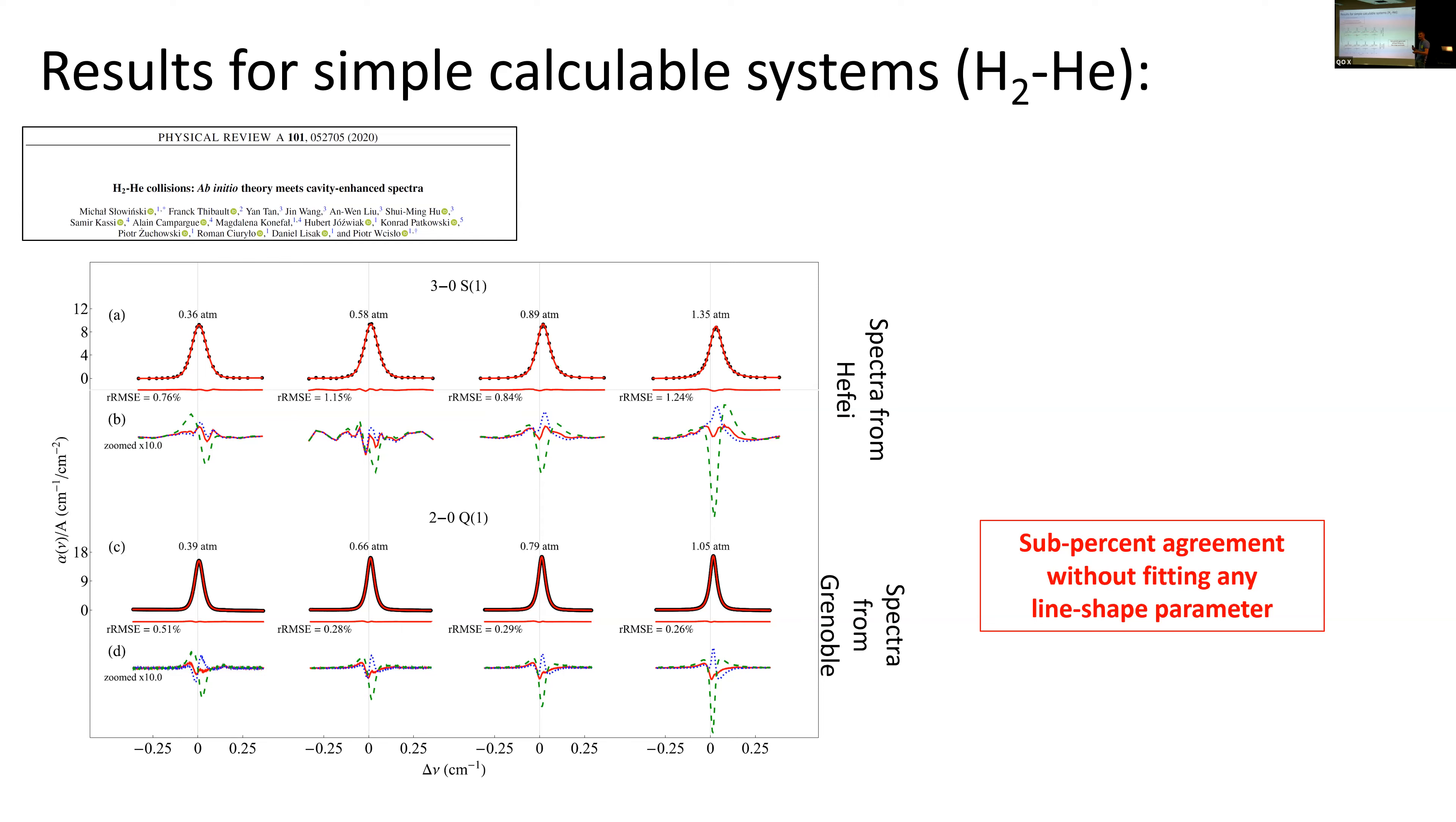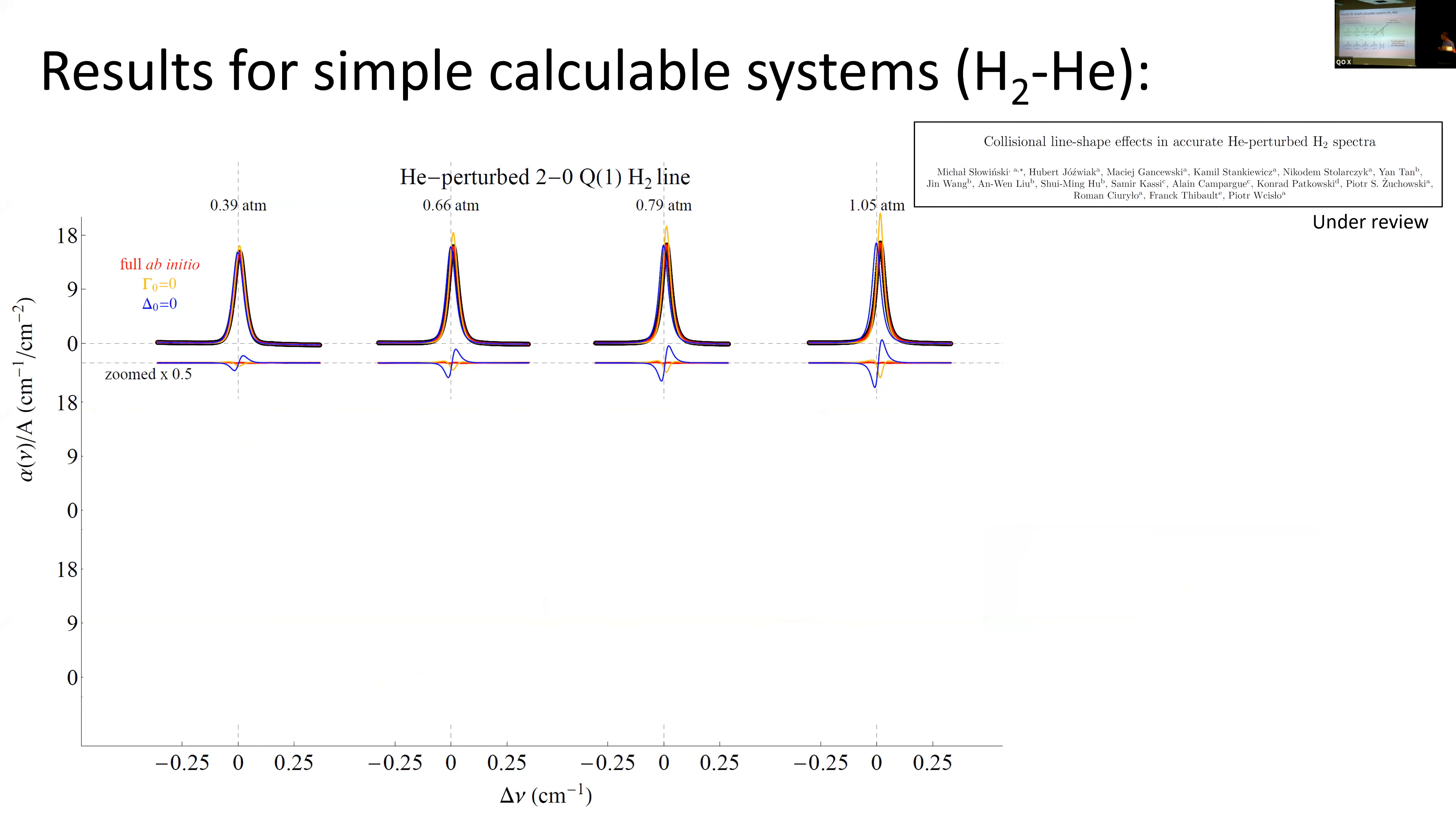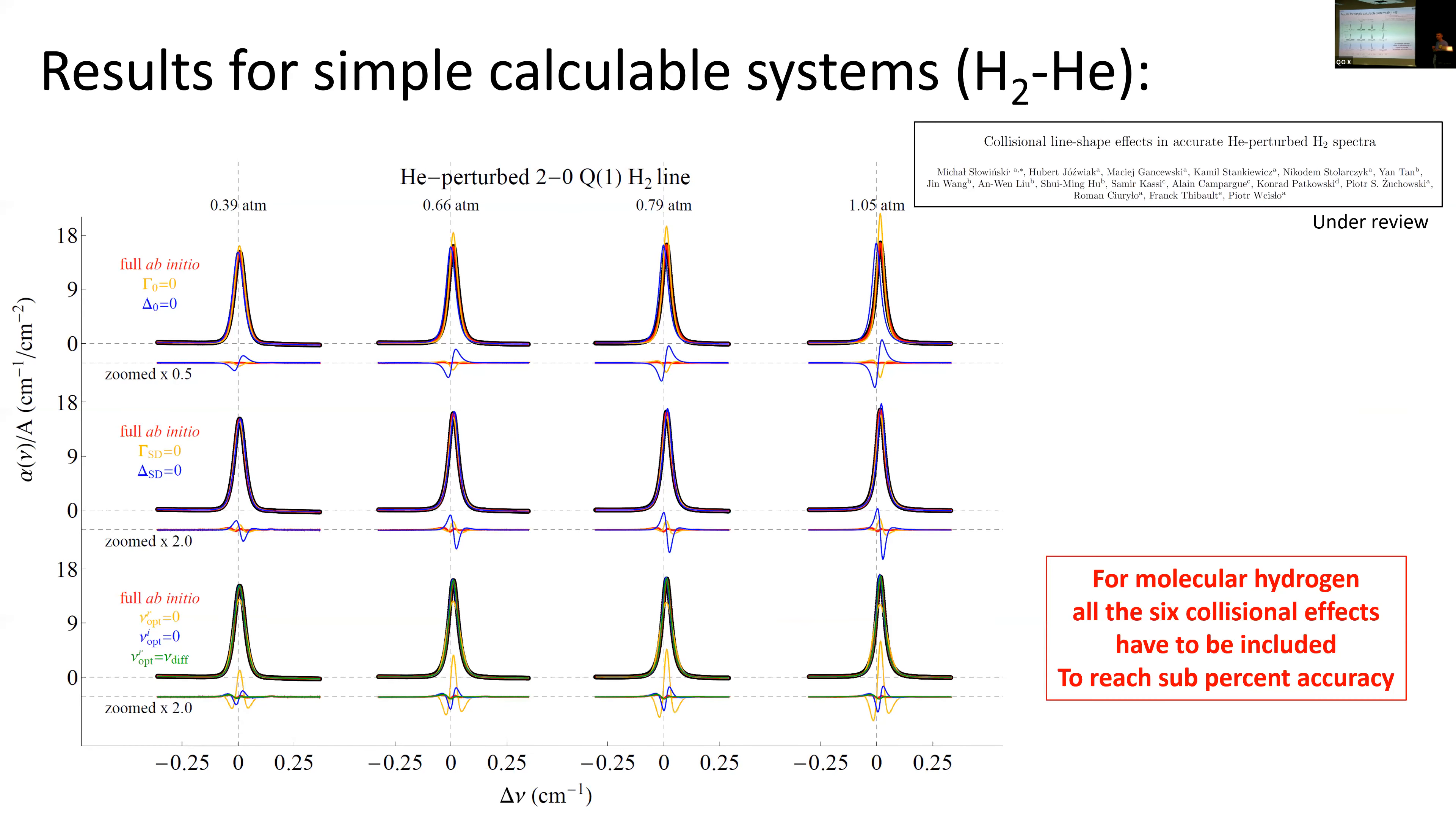We can now treat this as a tool for testing, for instance, calculations of potentials. We took different potential energy surfaces available in the literature and we can clearly use this precision spectroscopy to say which potential is the most accurate. We can say also a lot, not only about interaction, but also about the collisional processes. There's another reason why we chose molecular hydrogen. Molecular hydrogen is not only simple, but also it has a huge rotational constant.